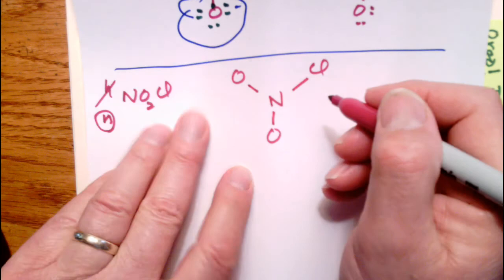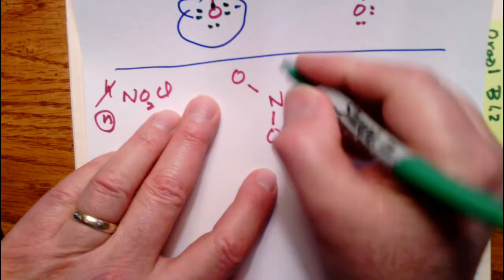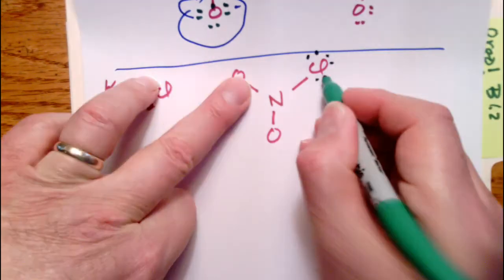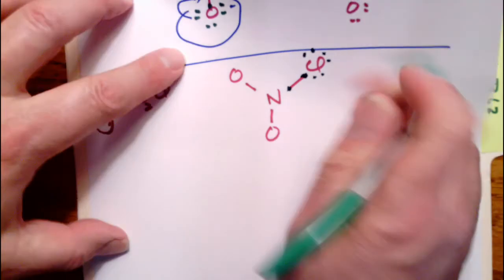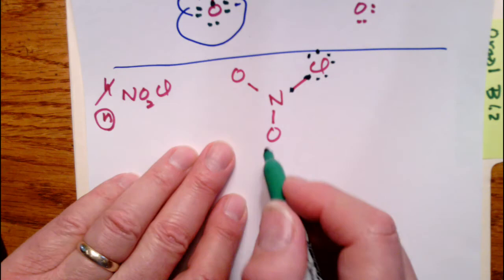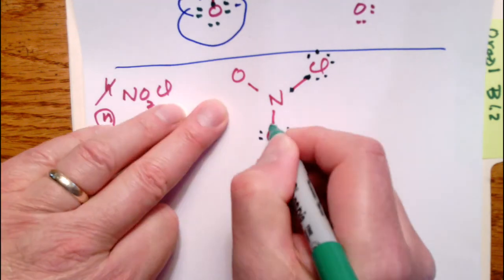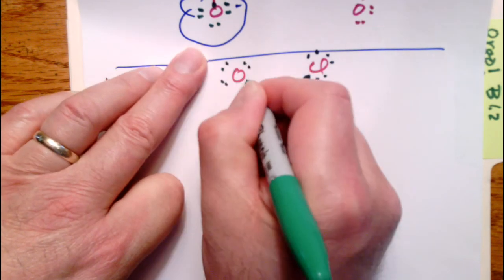Now Cl typically has seven electrons, right? And they're shared with the chlorine. So Cl is good, Cl is happy, has eight electrons. Then we make the oxygen happy by putting six here, seven and eight. Six here, seven and eight.